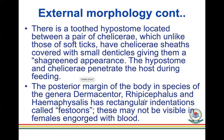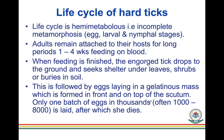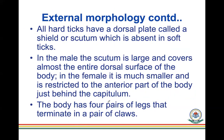The posterior margin of the body in genera Dermacentor, Rhipicephalus, and Haemaphysalis has rectangular indentations called festoons — these may not be visible in females. If you see festoons, you know it is a hard tick within those genera. Hard ticks also have a dorsal plate called the scutum or shield, which is absent in soft ticks.